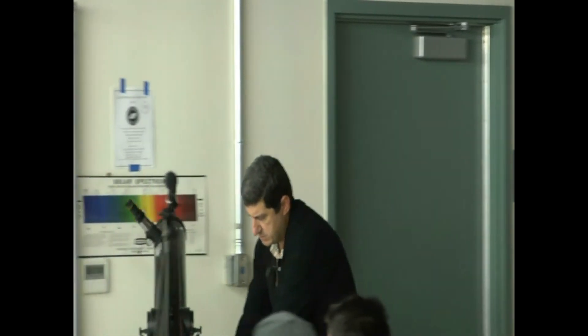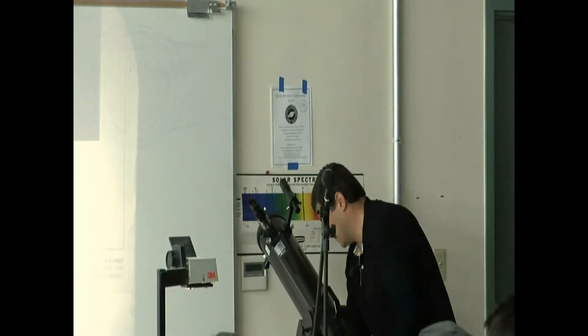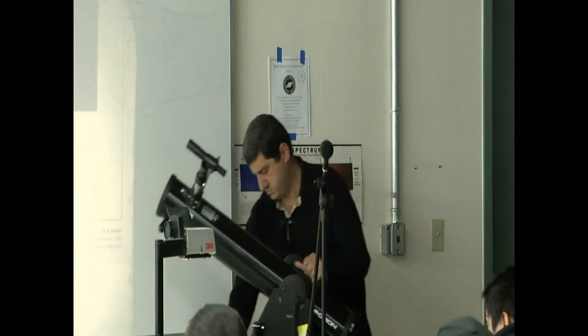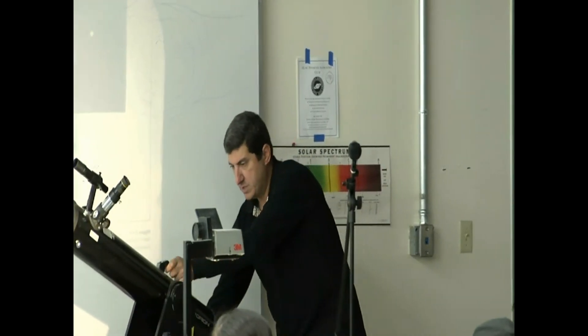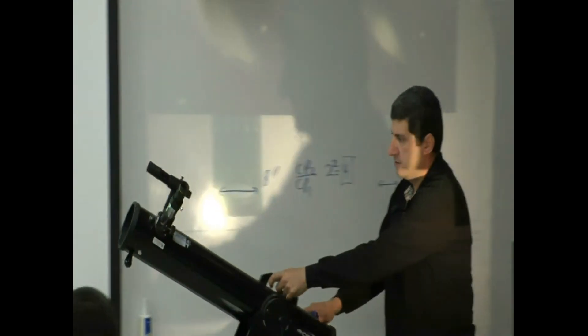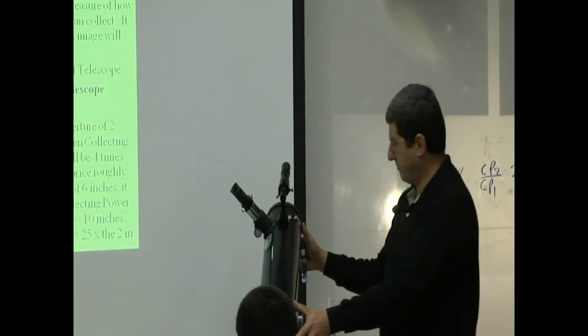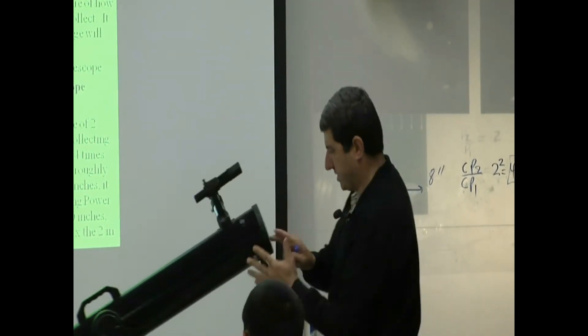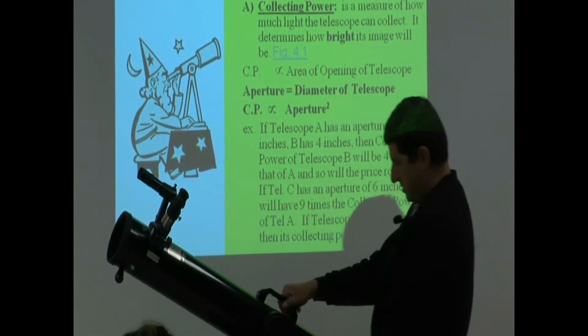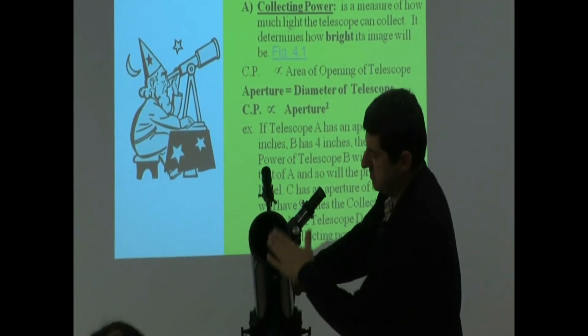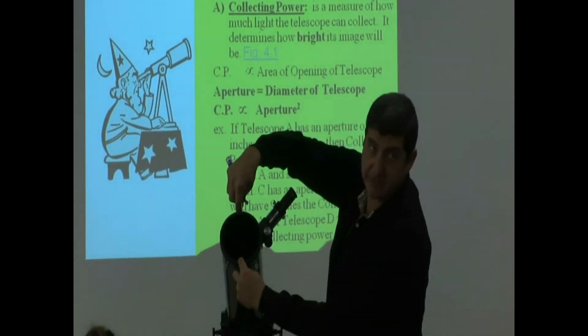I'm going to show you this one throughout this lecture — I'll bring it also on Wednesday. You see this one here? This one would be a four-inch telescope. As a matter of fact, it says on it, it's about a four-and-a-half-inch telescope — 4.5-inch. So from here to here, four-and-a-half inches.